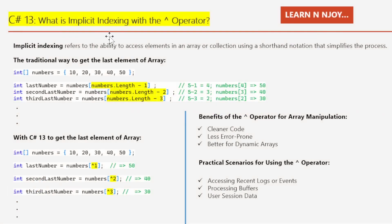C# 13 — what is implicit indexing with the caret operator? Let's first understand what we mean by implicit indexing. In C#, implicit indexing refers to the ability to access elements in an array or collection using a shorthand notation that simplifies the process. With the introduction of the caret operator, we can now access array elements from the end of the array instead of counting from the beginning. Let's understand it with the help of examples.